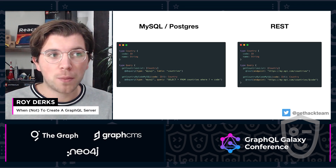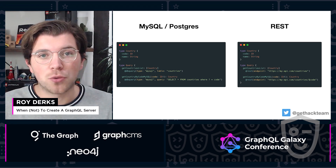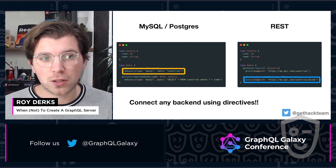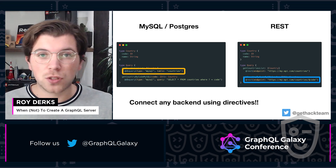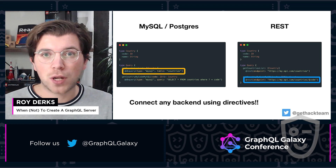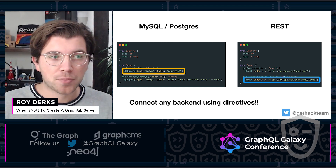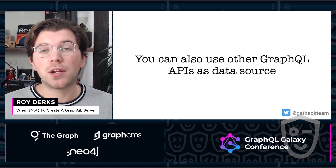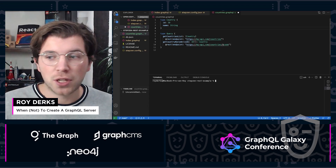Stepzen lets you connect any data source — databases like SQL or Postgres, REST APIs, or other GraphQL APIs. Based on the data source, a fully performant serverless GraphQL API is created for you. It uses just GraphQL schema design language with custom directives to link the data source. Here are two examples: MySQL/Postgres on the left and REST on the right. You can see that right from within your schema, using just GraphQL SDL, you can create connections with any backend or data source.